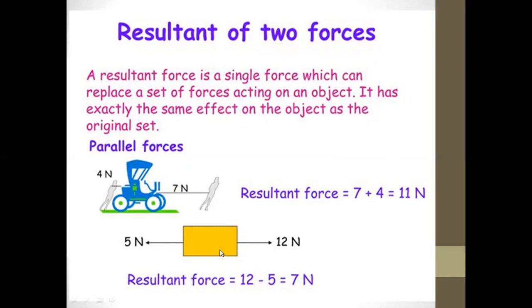Second sub-case: if the two forces are in opposite directions, as shown in the figure. We assume the resultant force is in the direction of the greatest force. So this force equals positive 12 and the other force, in the opposite direction, has magnitude negative 5. The resultant force equals 12 minus 5, which equals 7 Newtons.